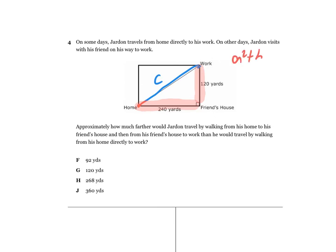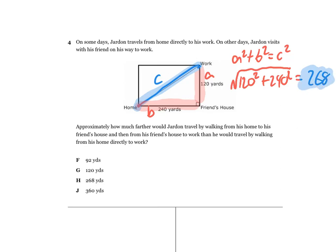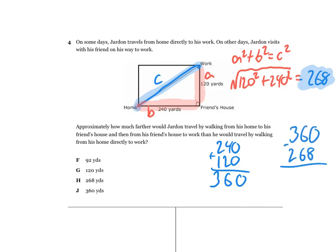I'm going to call the legs a and b. In the calculator, to get c, I do the square root of 120 squared plus 240 squared, and that comes out to about 268. That's side c — the direct route. Now we need the total length if he goes home to friend's house to work: 240 yards plus 120 yards equals 360 yards. We want to know how much he saves by going directly to work — that part you'll have to figure out.